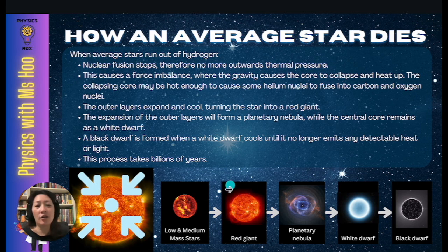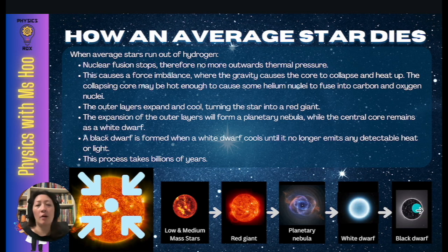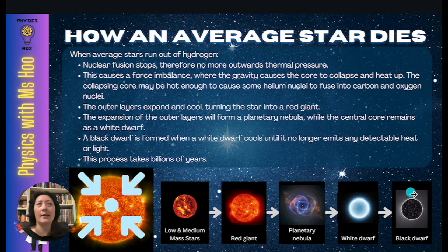The expansion of the outer layers will form a planetary nebula, while the central core remains as a white dwarf. A black dwarf is formed when a white dwarf cools enough until it no longer emits any detectable heat or light. Don't worry — this process takes billions of years.